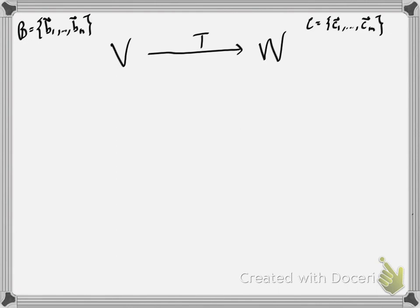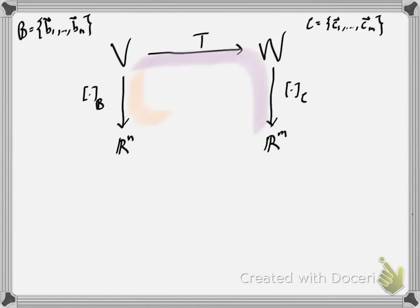And a basis C given by C1, C2, up to Cm for the vector space W. Basis B, using the coordinate map, gives us a linear transformation to Rn, and similarly there's a linear transformation to Rm given by the coordinate map of basis C.